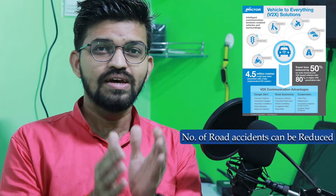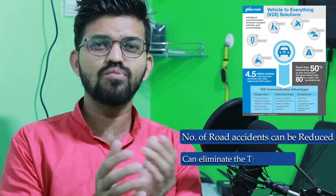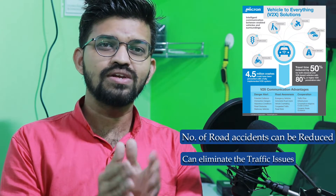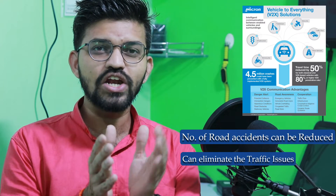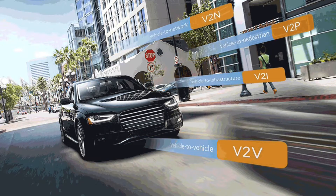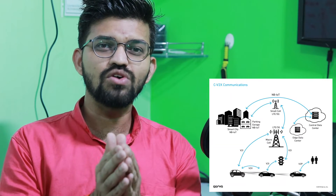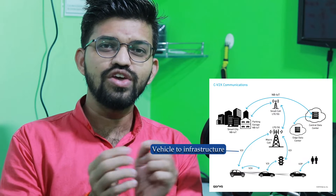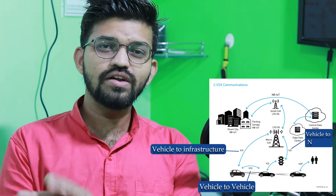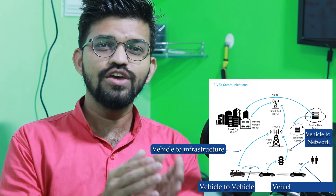In that scenario we solved the parking problem, but similarly we can solve many other problems — the number of road accidents can be reduced exponentially by implementing V2X communication, and the problem of traffic can also be eliminated. V2X establishes a secure communication technology between a vehicle and everything around it. It comprises V2I (vehicle to infrastructure), V2V (vehicle to vehicle), V2N (vehicle to network), and V2P (vehicle to pedestrian).